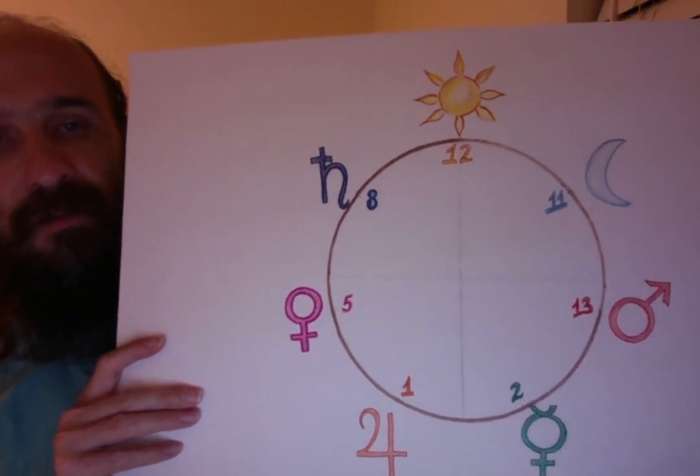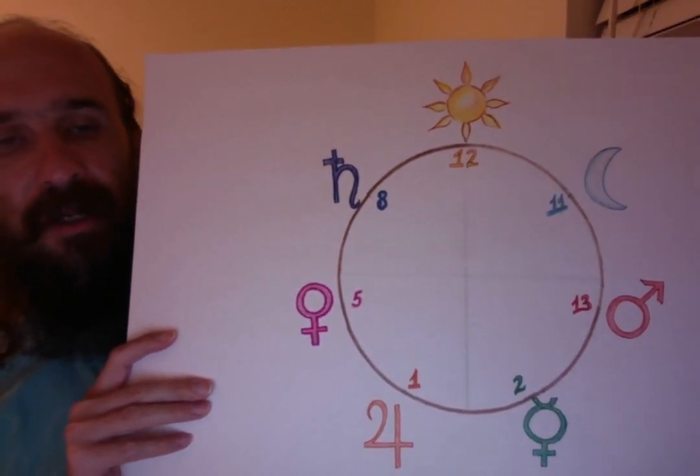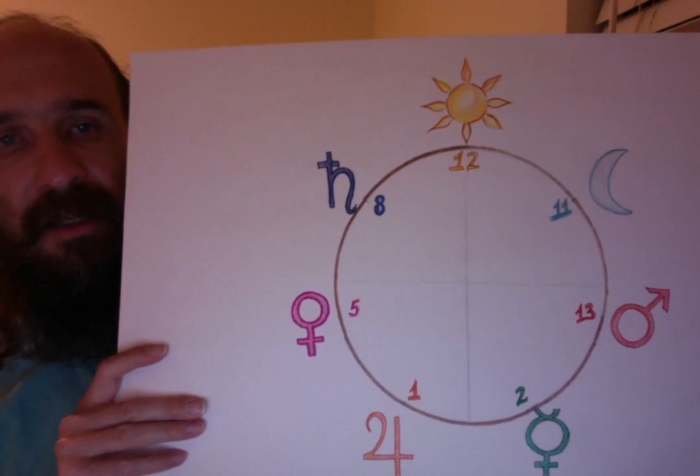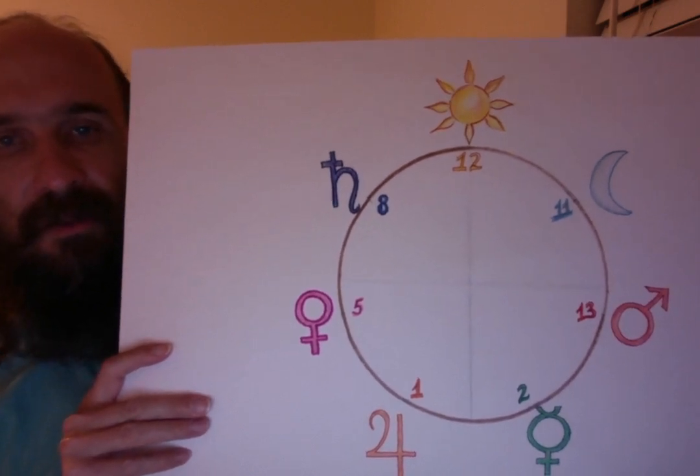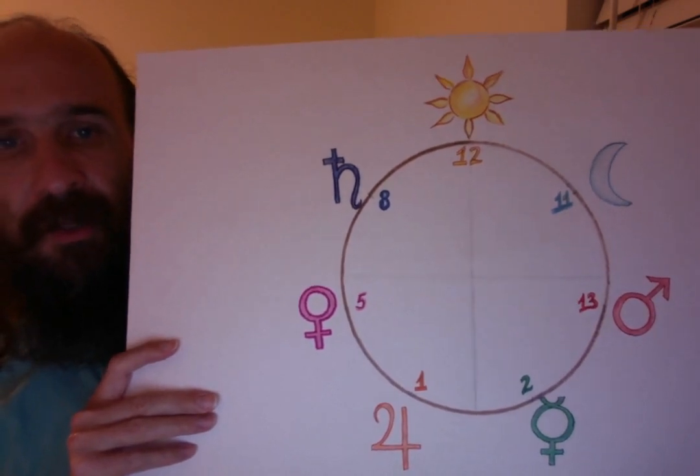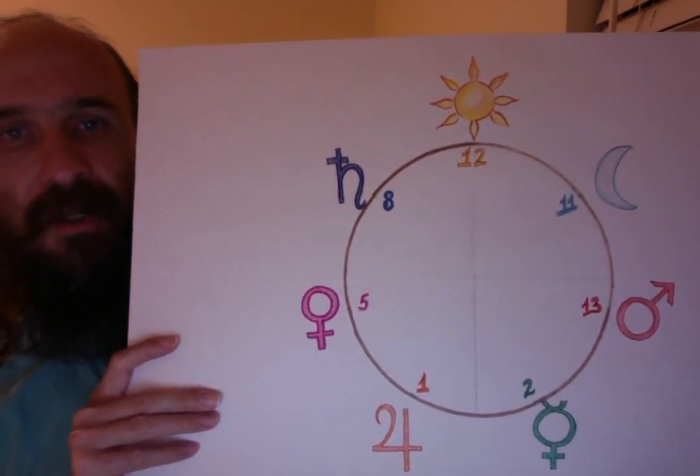You may have wondered at some point in your life why Thursday comes in between Wednesday and Friday. It seems no one in living memory can answer that question, but I have figured it out using math.